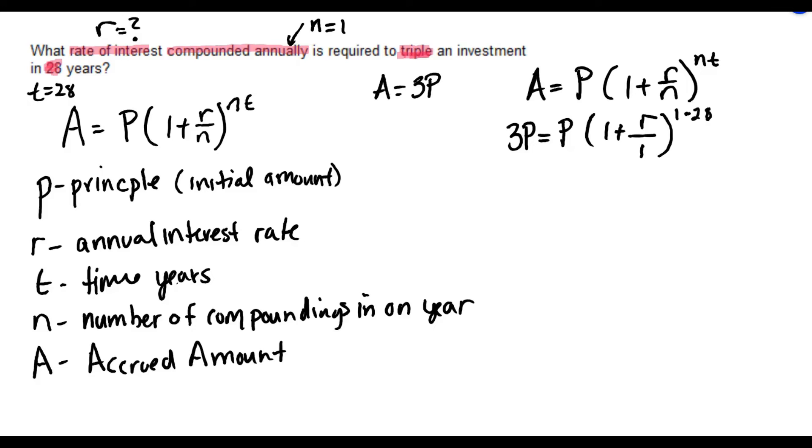So we're going to solve this. First let me do a little bit of cleanup. R over 1 is the same thing as R. And 1 times 28 is 28. Now to solve this, I can divide both sides by P. That's going to cancel out the P on both sides, leaving me with 3.